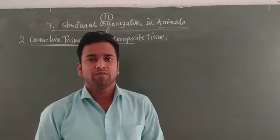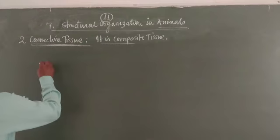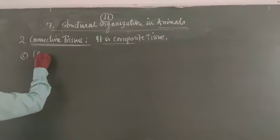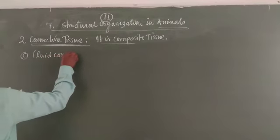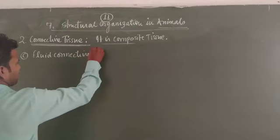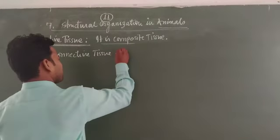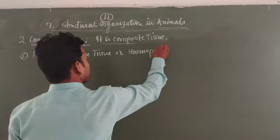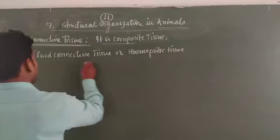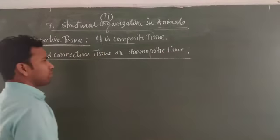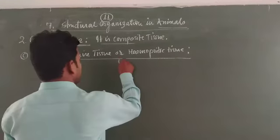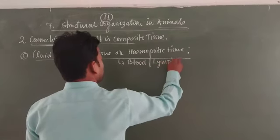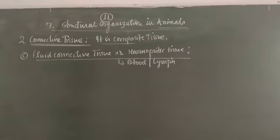Hello dear students. In this class we are going to learn Fluid Connective Tissues under the topic Connective Tissues. Fluid connective tissue is also called Hemopoietic Tissue. The main parts of fluid connective tissues are blood and lymph. Both of these constitute the fluid connective tissues.